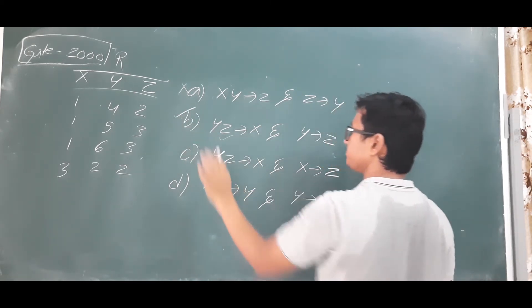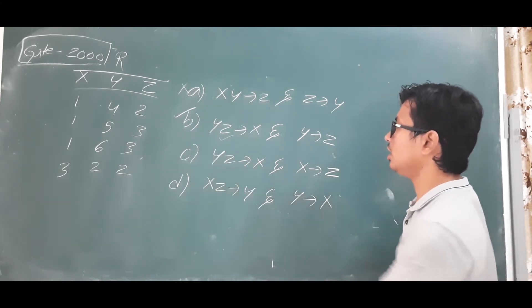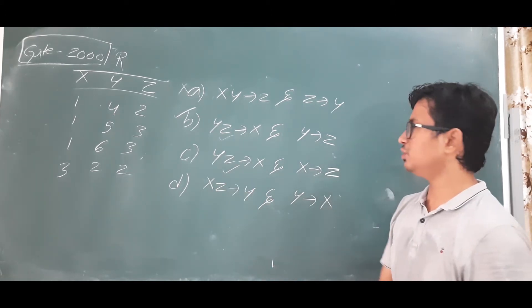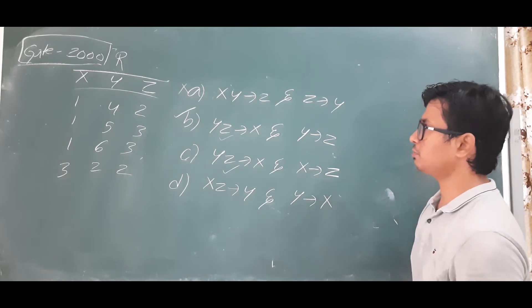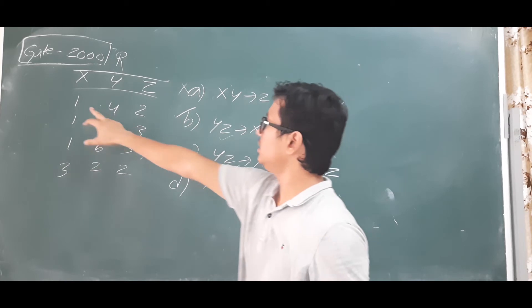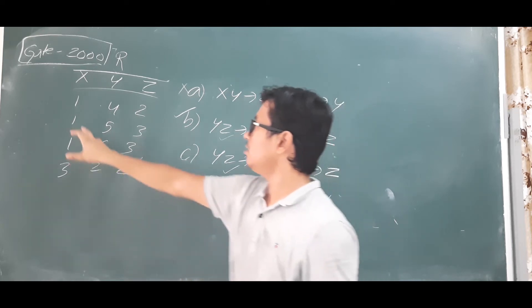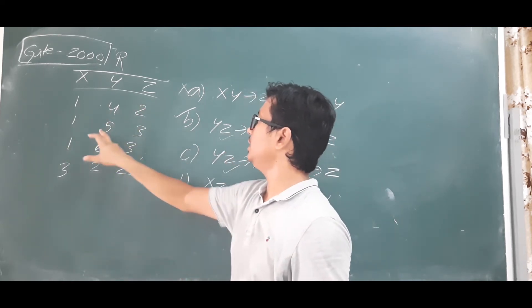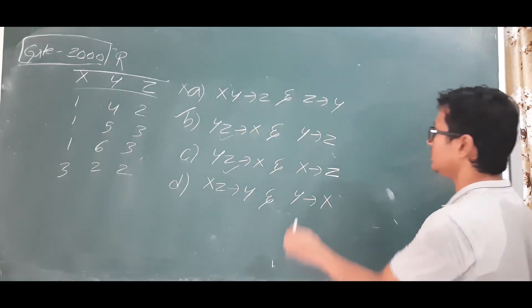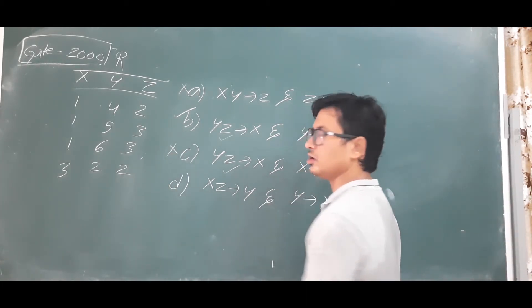Since both Y→Z and Z→X are valid, option B looks entirely correct. Now for option C: Z→X we already verified as valid. But the option also includes X determines Z — for X=1, it appears three times. For X=1 it gives Z=2 in one row and Z=3 in another — inconsistent results. So X determines Z is NOT a valid functional dependency, and option C is incorrect.